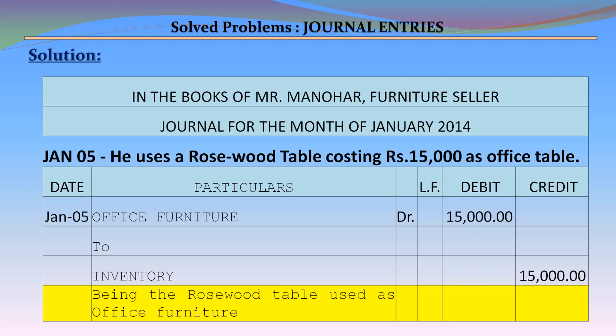January 5 – He uses a rosewood table costing Rs. 15,000 as office table. Journal entry: Office Furniture Account debit Rs. 15,000 to Inventory Account credit Rs. 15,000, being the rosewood table used as office furniture.